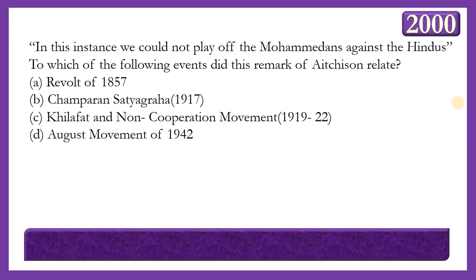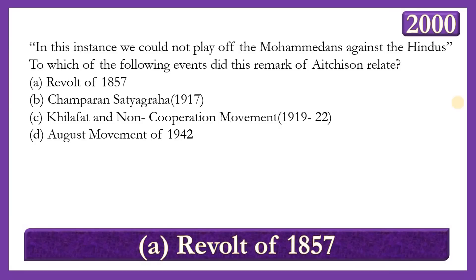Next question: 'In this instance, we could not play off the Mohammedans against the Hindus.' To which event did this remark of a British officer relate? Options: Revolt of 1857, Champaran Satyagraha of 1917, Khilafat and Non-Cooperation Movement 1921-22, or August Movement of 1942. The answer is the Revolt of 1857, where Hindu-Muslim unity was so strong that a senior British officer made this complaint, acknowledging he could not use divide-and-rule tactics.